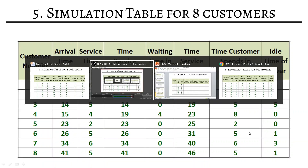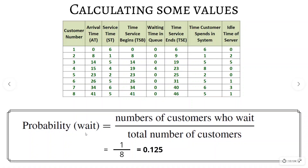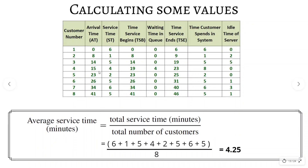This completes the simulation table for 8 customers. Now let's calculate some statistical values. For average waiting time, use the formula: total time customers wait in queue divided by total number of customers — add all waiting time values and divide by 8. For probability of waiting, it's the number of customers who waited divided by total customers. Only 1 customer waited, so it is 1/8, which equals 0.125. For average service time, add all service time values and divide by 8, which gives 4.25.